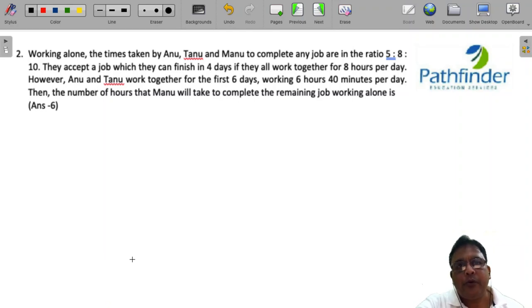CAT 2022 slot 2 question number 2 of quantitative aptitude. Working alone, the times taken by Anu, Tanu, and Manu to complete any job are in the ratio 5 is to 8 is to 10.